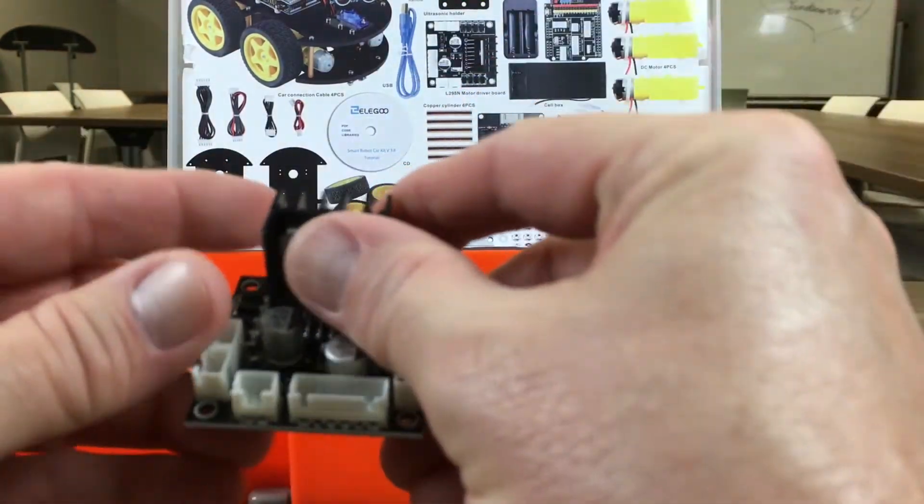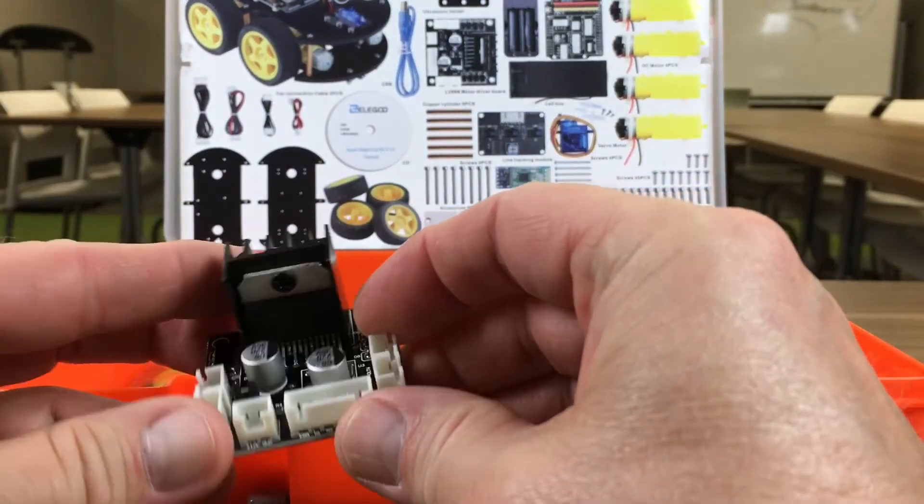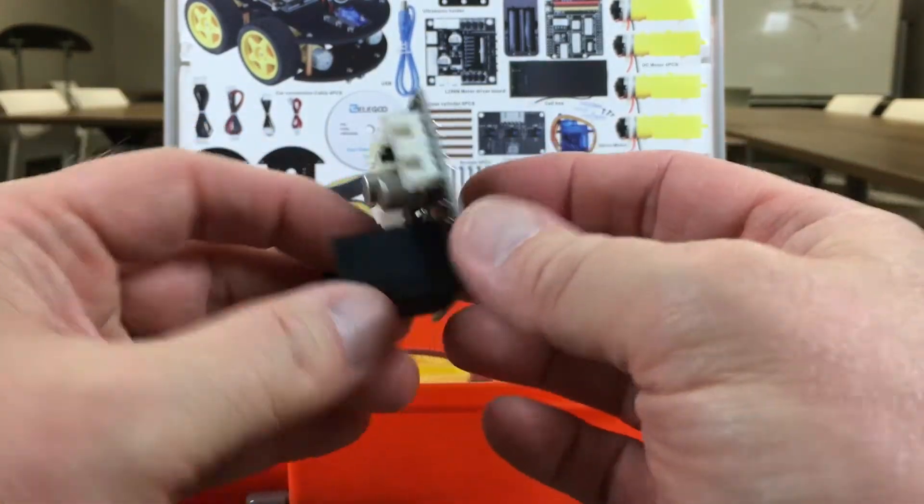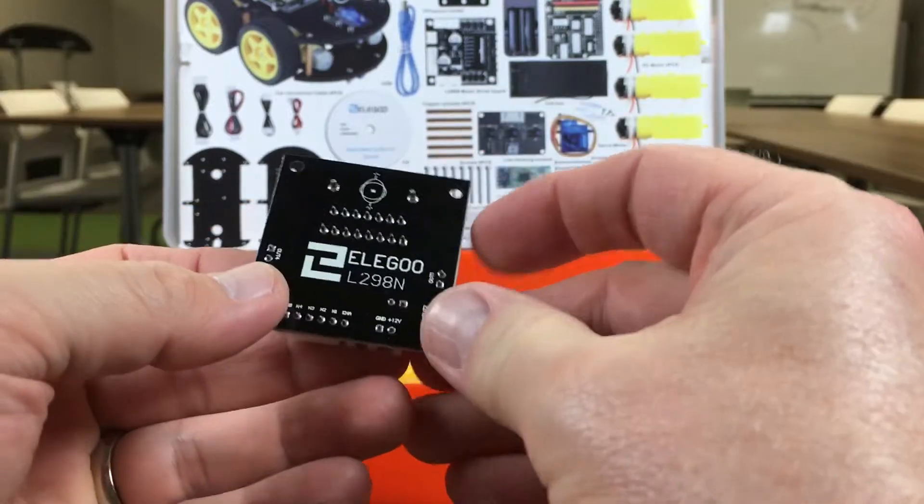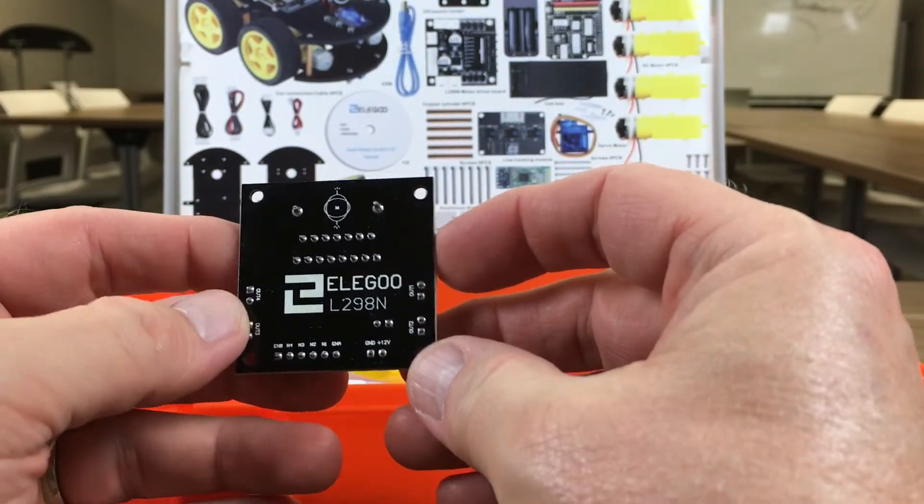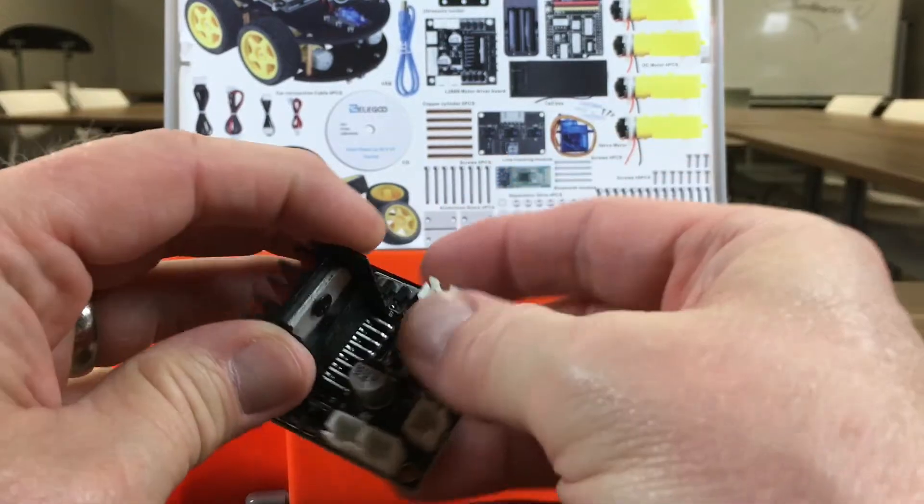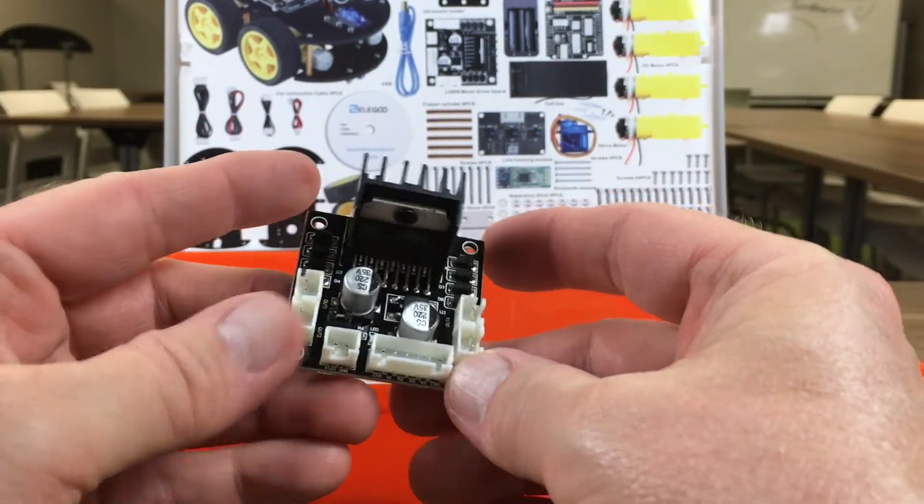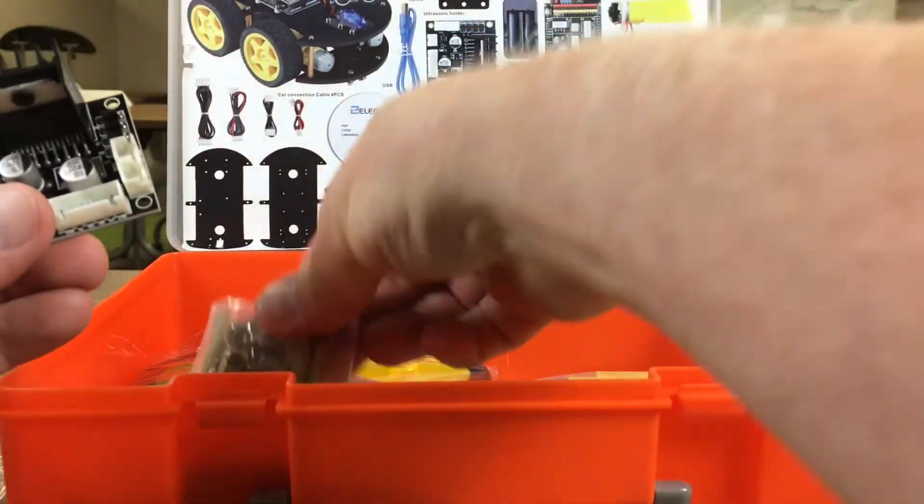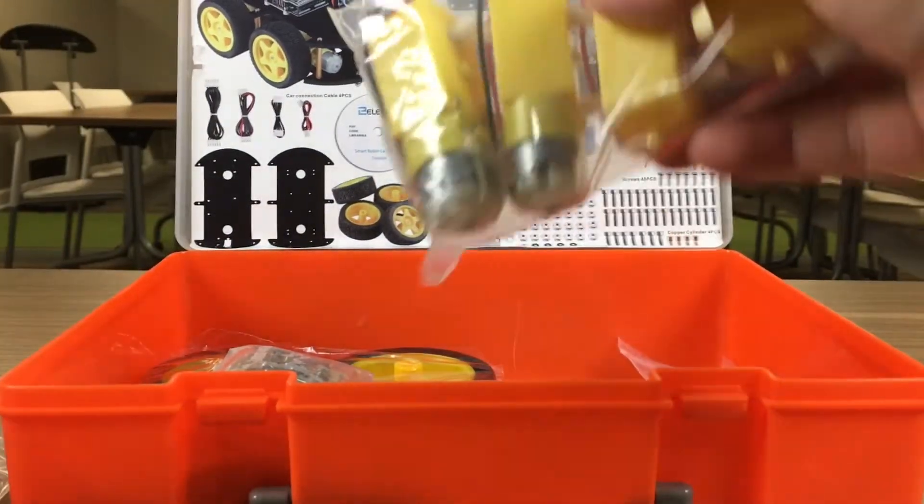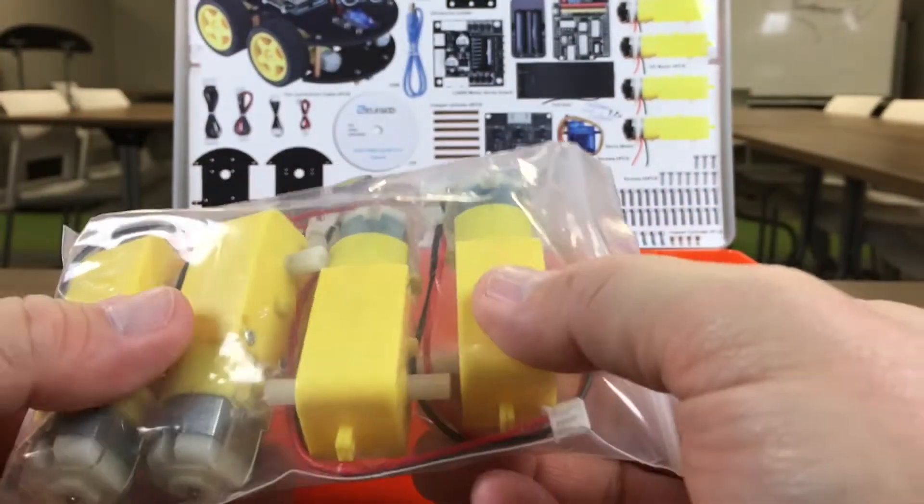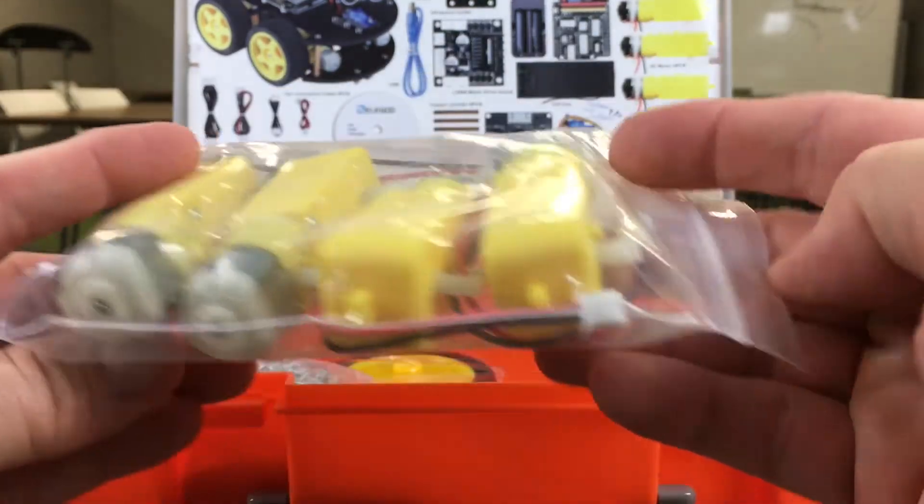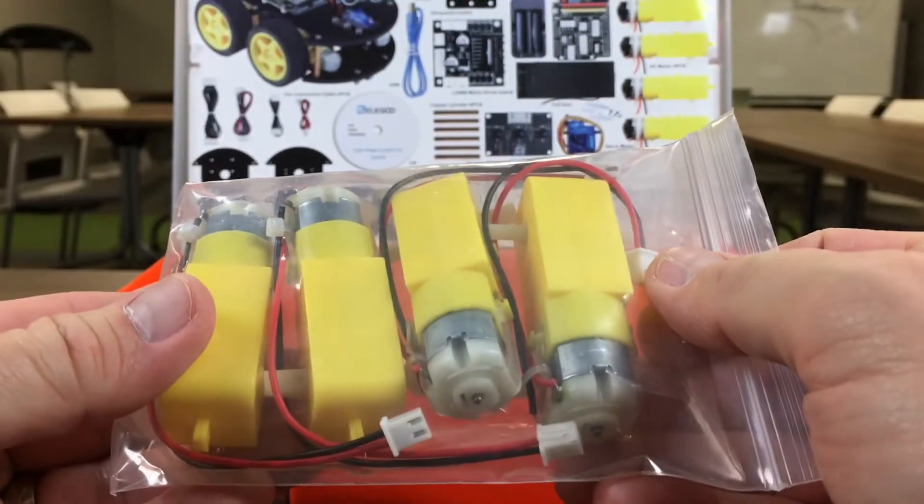Another key component here is your motor controller board, and this has got an L298 in it for your H-bridge to control your four motors, which are packaged in there. These are pretty much the standard six-volt DC motors that a lot of kits include.